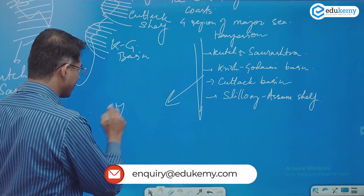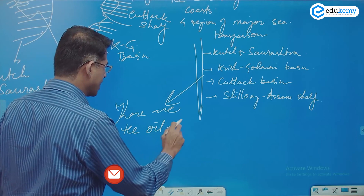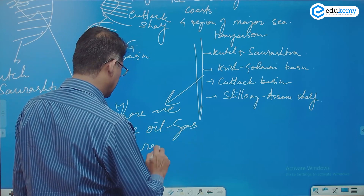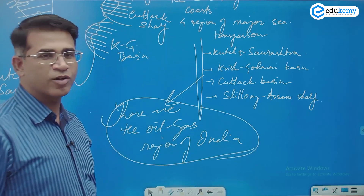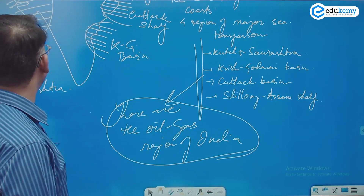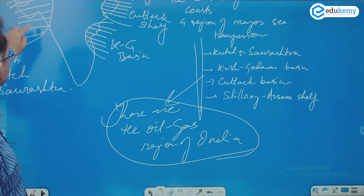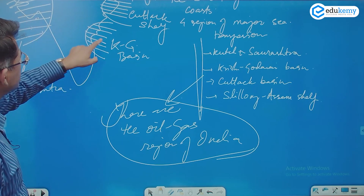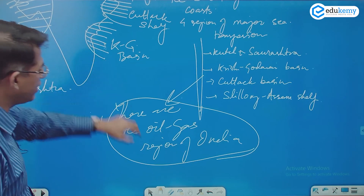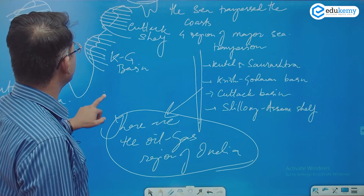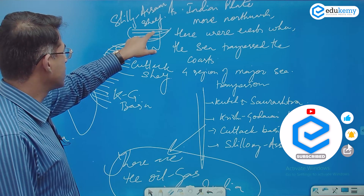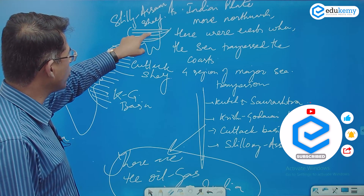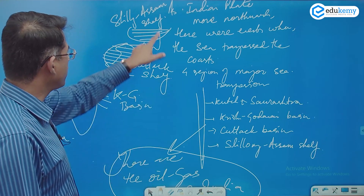These are the oil and gas regions of India. We have Bombay High, South Basin oil fields, the KG Basin Ravva oil fields. The Katak basin does not have much oil. In Assam: Sibsagar, Dibrugarh, Namrup, and Naharkatia are all oil field regions.